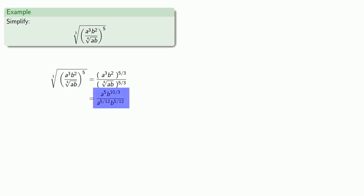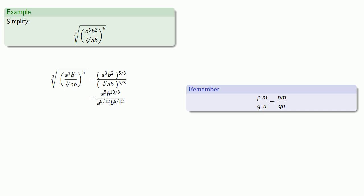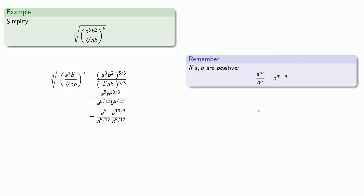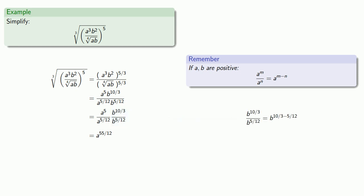Now we have a fraction. It helps to remember that we can break a fraction into a product of fractions by splitting up the factors of the numerator and denominator. We rewrite this as a quotient of a's times a quotient of b's. Now we have quotients of powered expressions, so we apply the quotient rule. a to the fifth over a to the five-twelfths is a to the power five minus five-twelfths — requiring some fraction arithmetic. Similarly, b to the ten-thirds over b to the five-twelfths is b to the ten-thirds minus five-twelfths, giving us a final exponent of thirty-five twelfths.